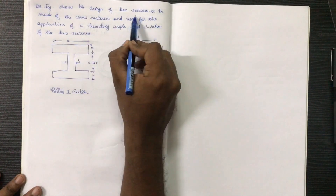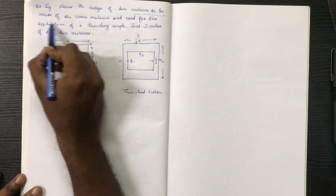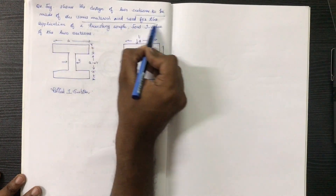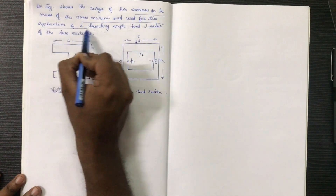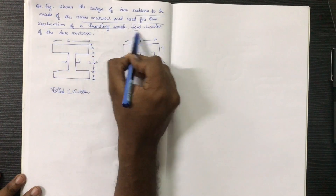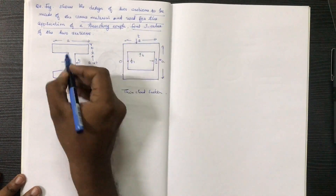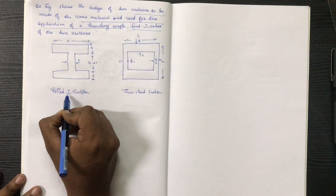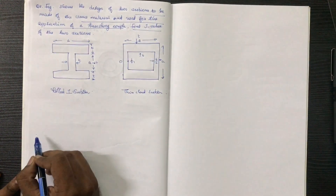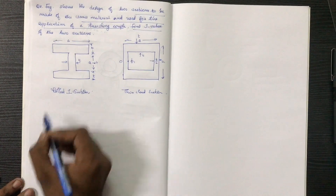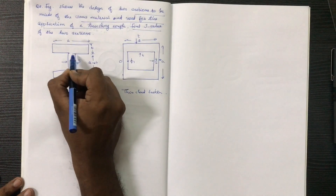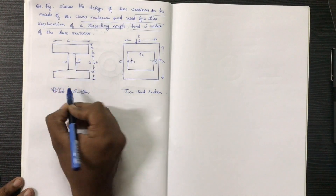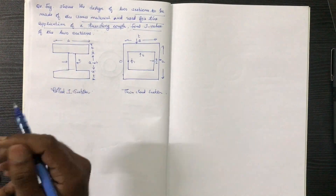It shows the design of two sessions — two made of same material and used for the application of the distinguishable. Find J-value. Now this is a rolled I-section. This I-section has 3 sessions.